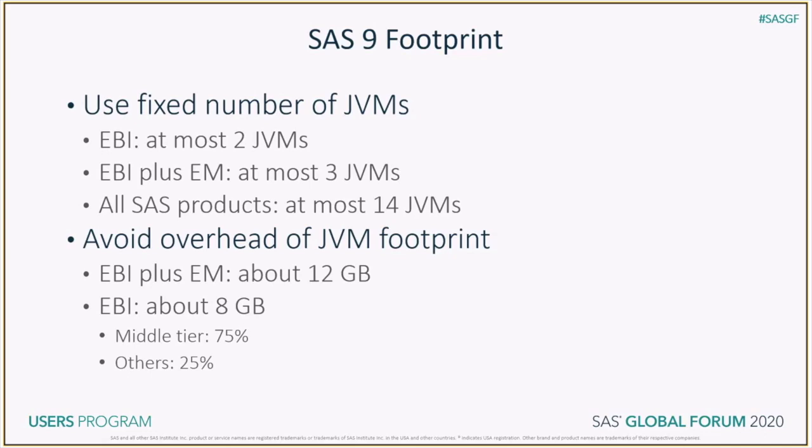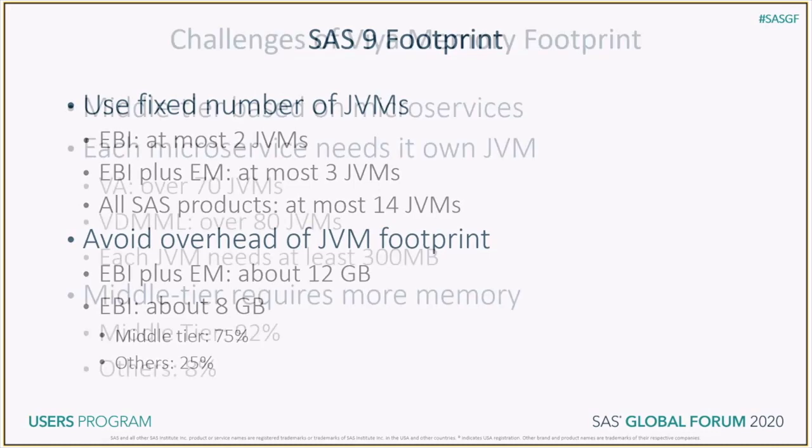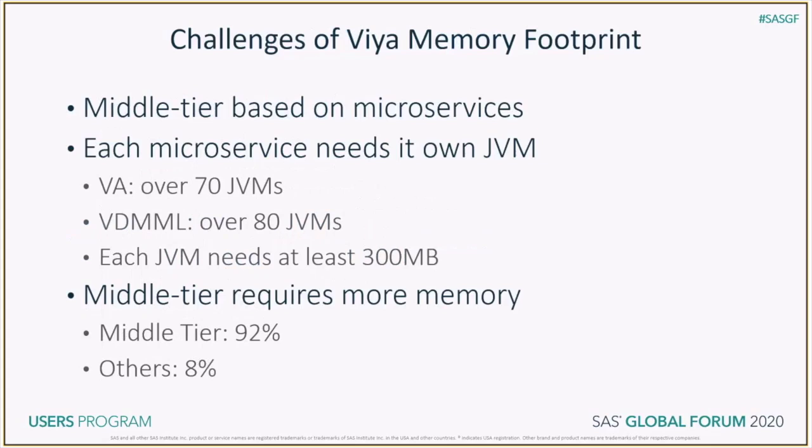Also, we are able to keep the footprint ratio of the middle tier at 75% of total footprint, and other tiers at 25%. Now, let's look at the Viya footprint.